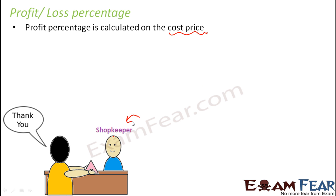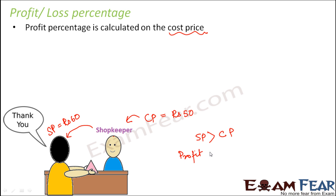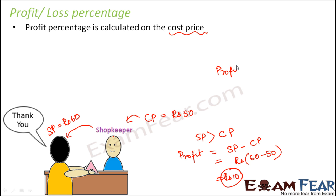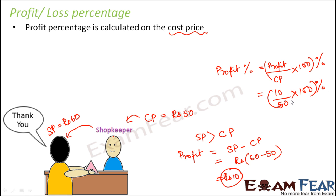Let's take an example. The shopkeeper purchases a book whose cost price is rupees 50 and sells it for rupees 60. SP is greater than CP, so the shopkeeper made a profit. The profit is SP minus CP, which is rupees 60 minus 50, equal to rupees 10. Now to calculate profit percentage: profit percentage equals profit divided by cost price, multiplied by 100%. That is 10 divided by 50 into 100, which equals 20%. The shopkeeper made a 20% profit by selling this book.